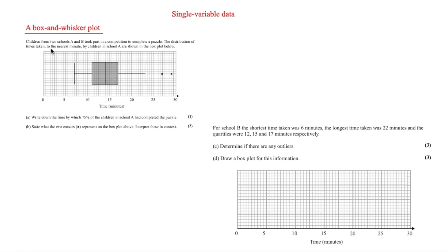This shows a box plot where children from two schools A and B took part in a competition to complete a puzzle. The distribution of times taken to the nearest minute by children in school A are shown in the box plot below. The line at the far left is the lowest value, which is 7. The first box line is the lower quartile Q1, which is 11. Then Q2, which is also the median, is 14.